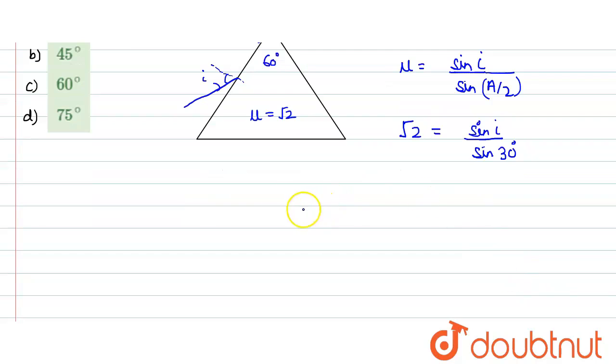That means our sine I would turn out to be root 2 times sine 30. What is sine 30? It is equals to 1 by 2. That means our sine I is equals to 1 over root 2. And for which value of sine is the value 1 over root 2?